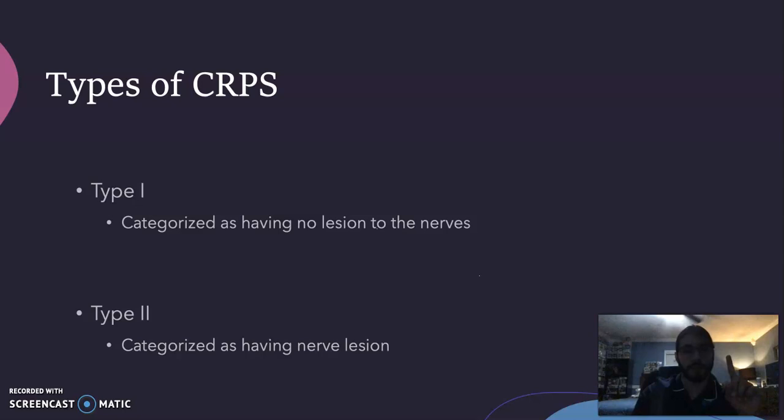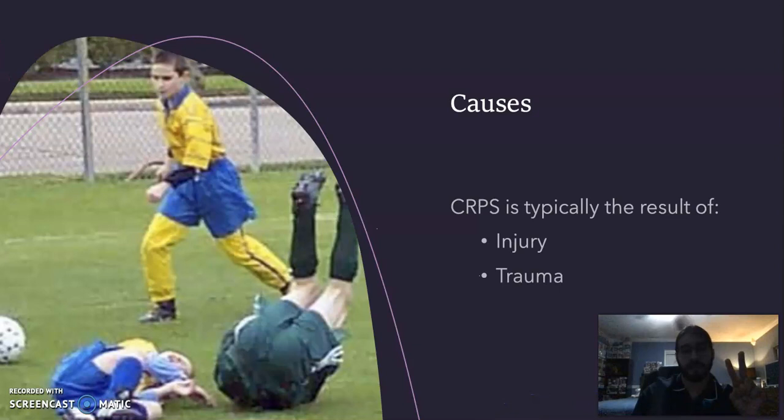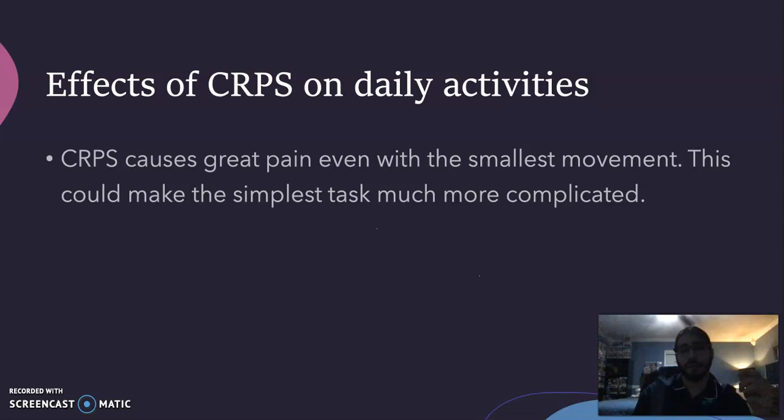Type 2 is categorized as having a nerve lesion. As for causes, CRPS is typically the result of injury and trauma — sometimes even a surgery could have the potential to turn into CRPS. CRPS causes great pain even with the smallest movement.